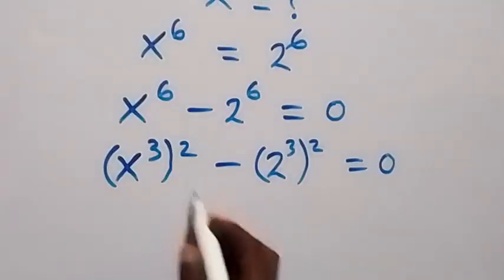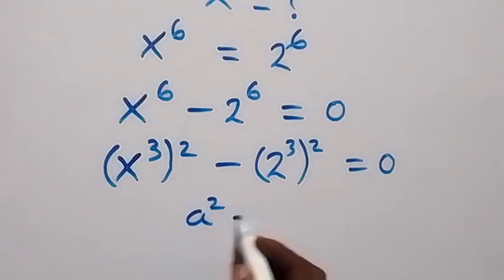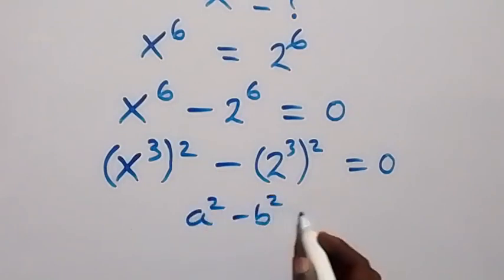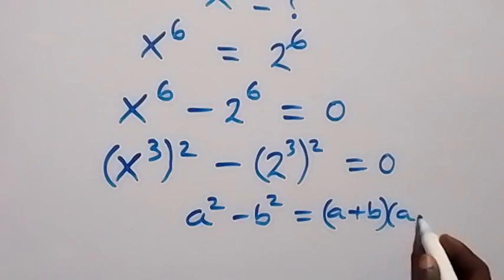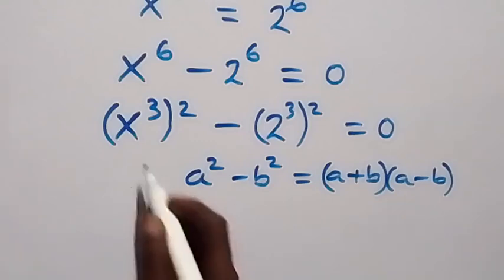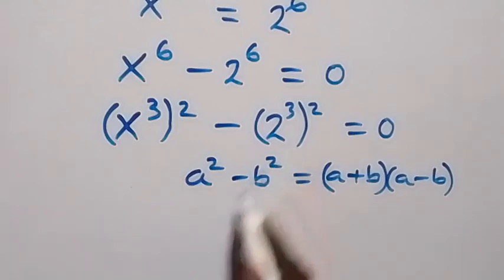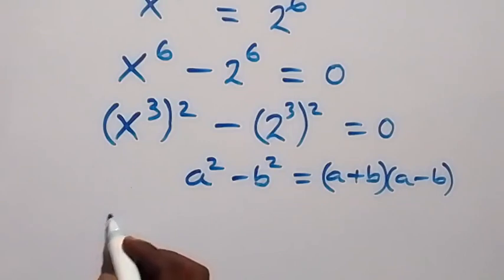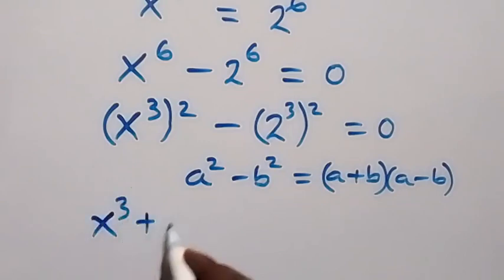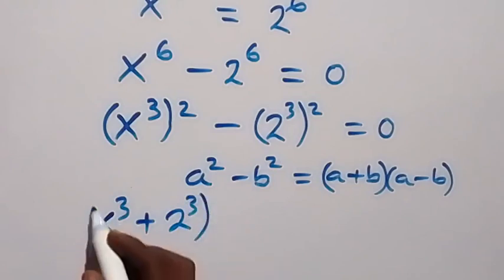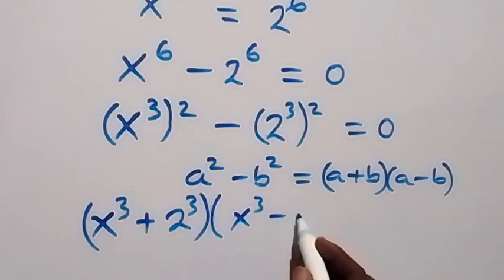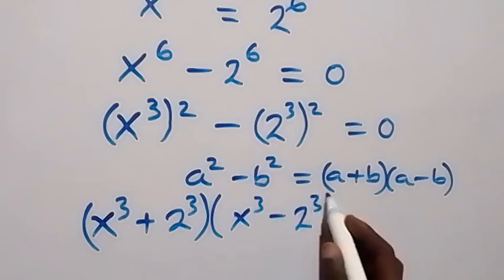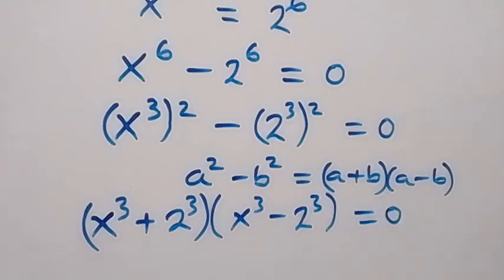This follows from the difference of perfect squares: a squared minus b squared equals a plus b multiplied by a minus b. Here a is serving as x raised to power 3, and b is serving as 2 raised to power 3. This gives us x raised to power 3 plus 2 raised to power 3, multiplied by x raised to power 3 minus 2 raised to power 3, equals to 0.